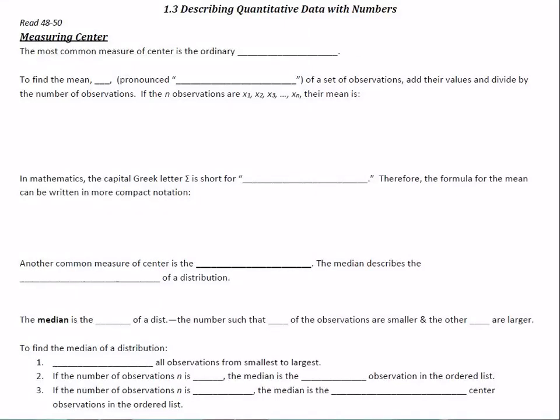Describing quantitative data with numbers. We're going to start with some familiar things that you probably already know about. The most common measure of center is the plain old ordinary mean, or the average.